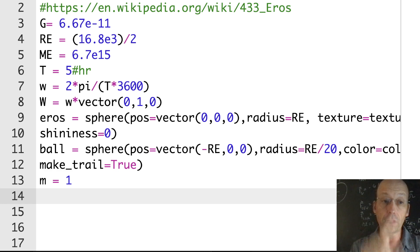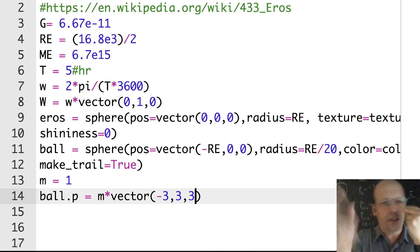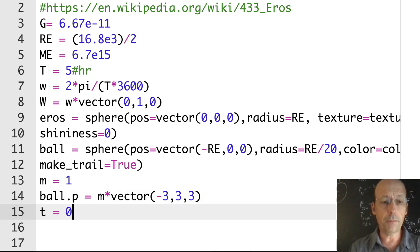I need the mass too. I'm just going to call this M, not a property of the object. It's just a one kilogram ball. It doesn't really matter. The mass cancels. Now I need the initial velocity. Let's give the ball a momentum. M times vector, I used three before. Let's say negative three, I want it moving away from the planet. Then three in the up direction, and three in the z direction which is towards you, just to shake it up a little bit.